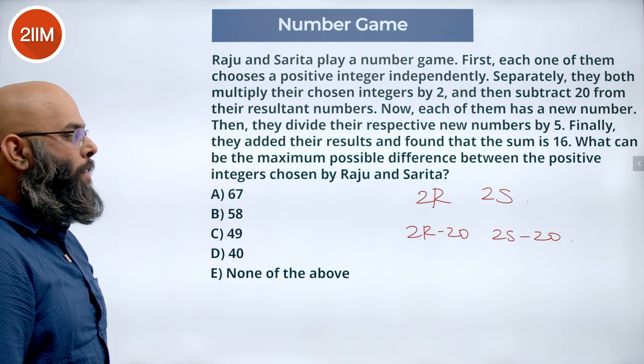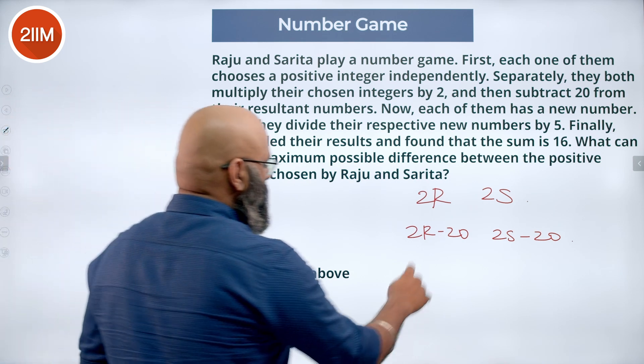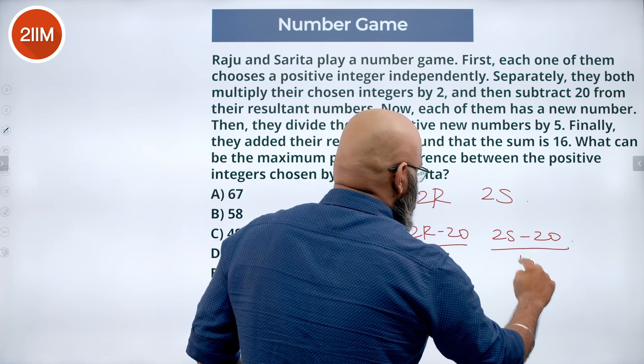Now each of them has a new number. Then they divide the respective new numbers by 5. So here it is divided by 5, this is divided by 5.